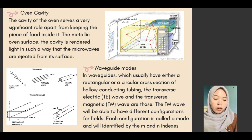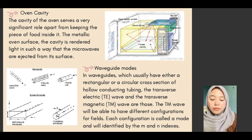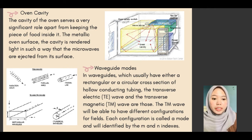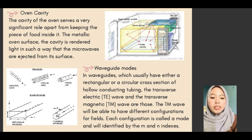The main part of the construction of the microwave oven is the oven cavity. The cavity of the oven serves a very significant role apart from keeping the food inside it. The metallic oven surface of the cavity is rendered in such a way that the microwaves are reflected from the surface.